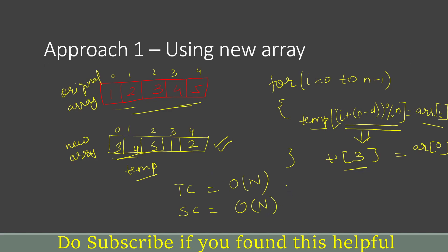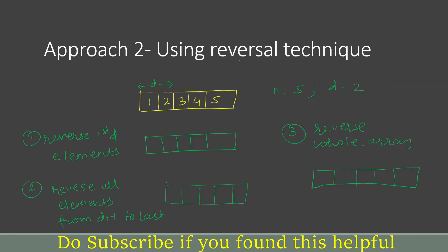Now let's see the next approach where we will reduce this space complexity. The second approach is using the reversal technique. This is the given array and d is 2, that is we have to rotate this array 2 times. This method has 3 steps.